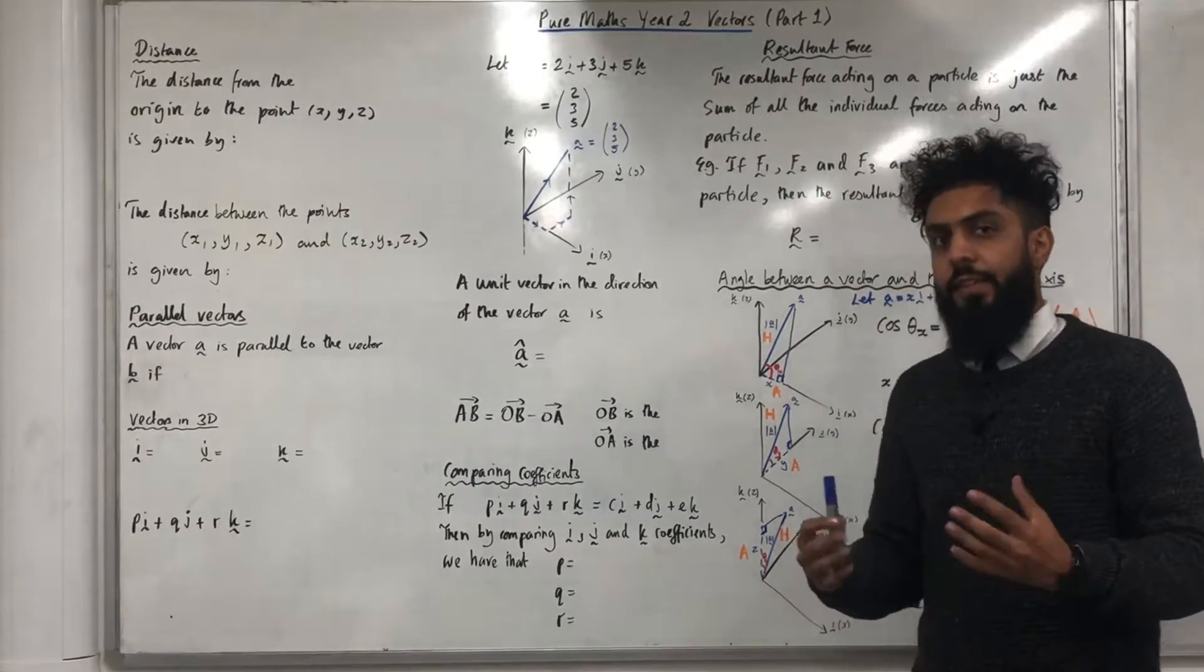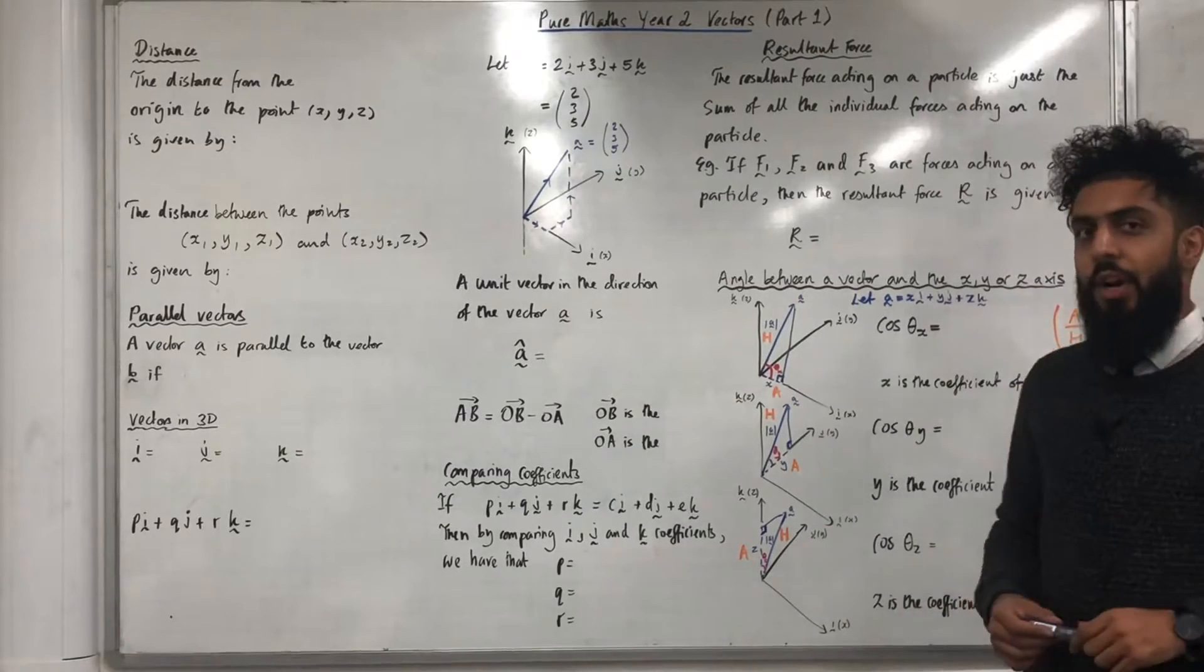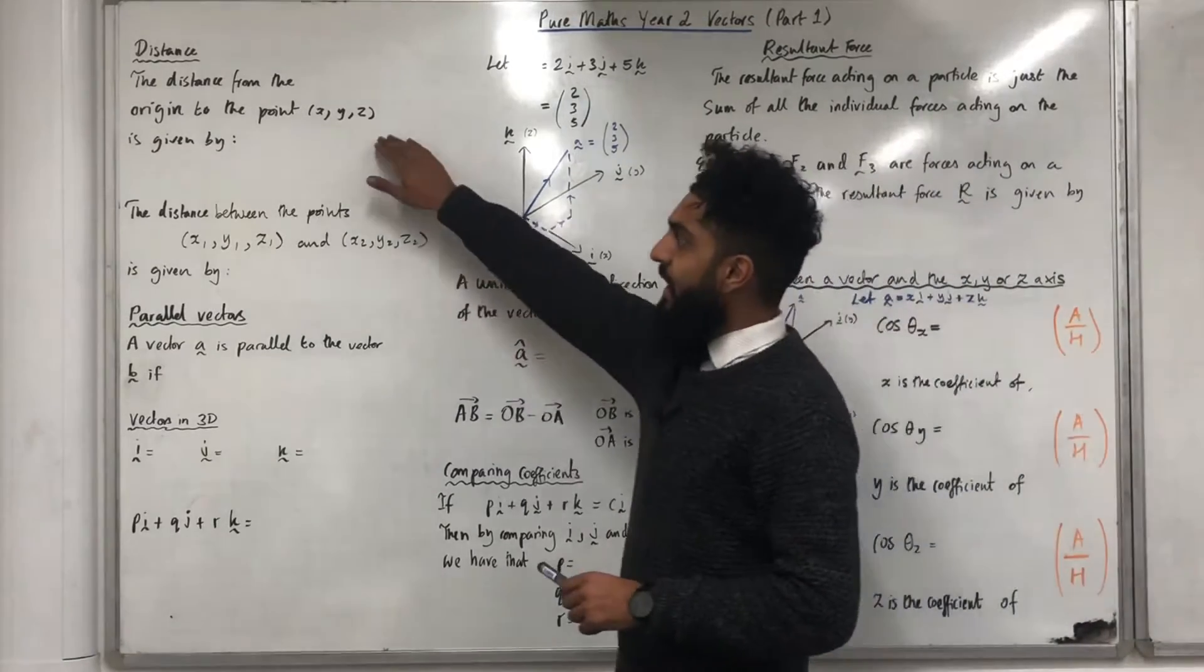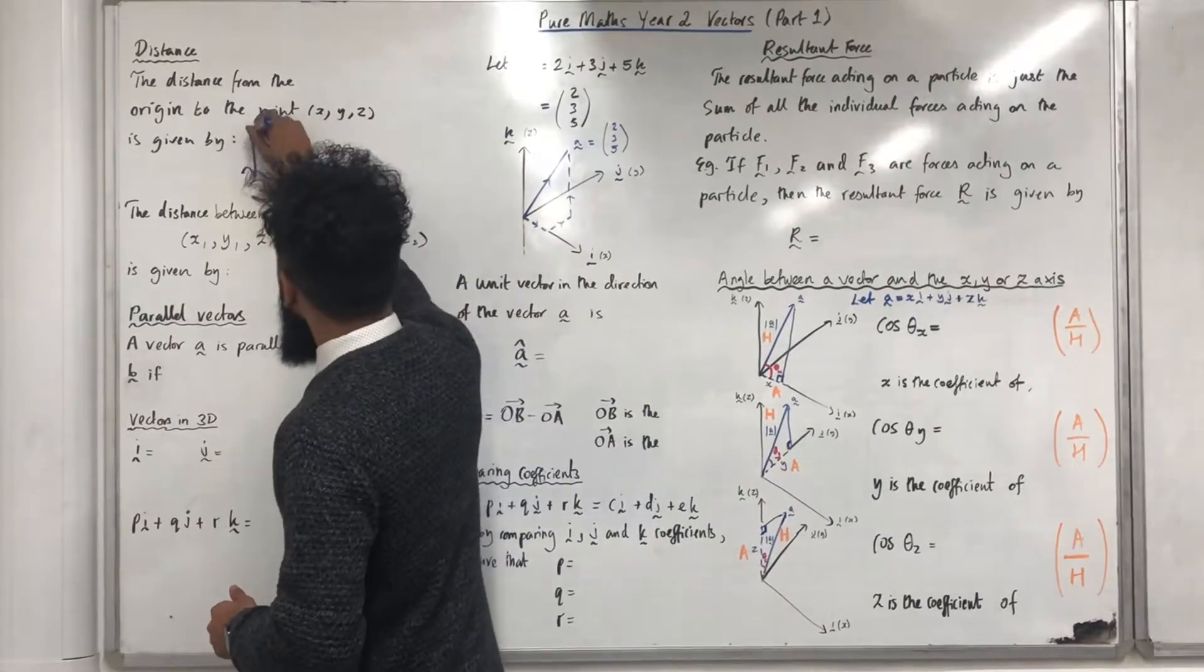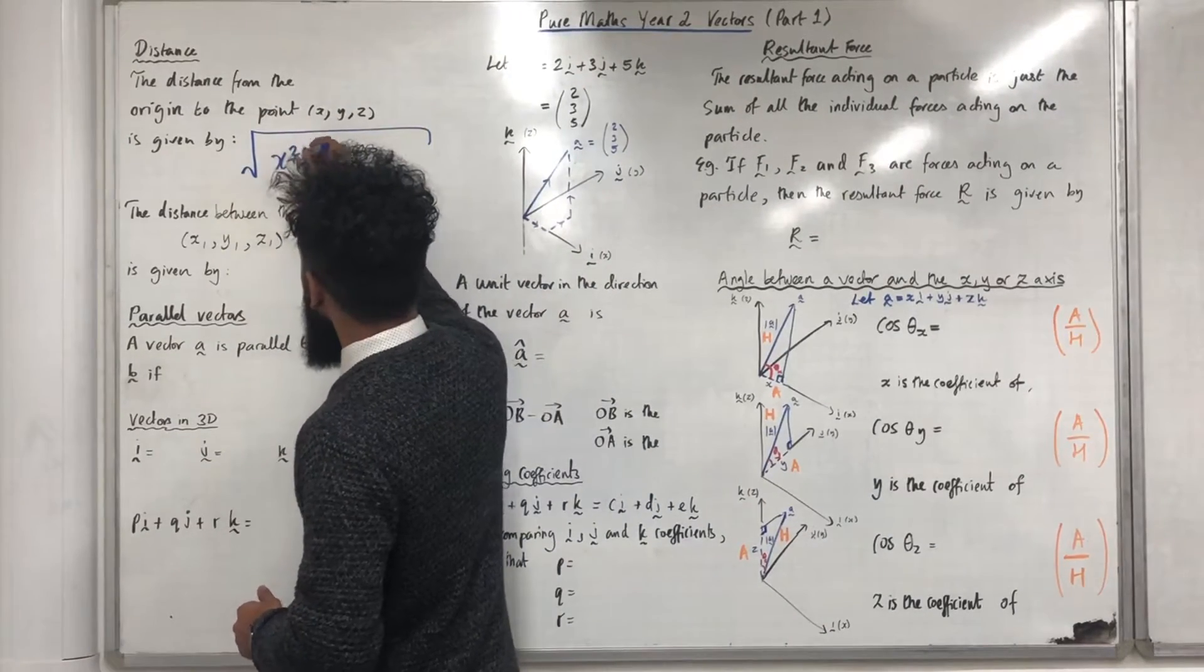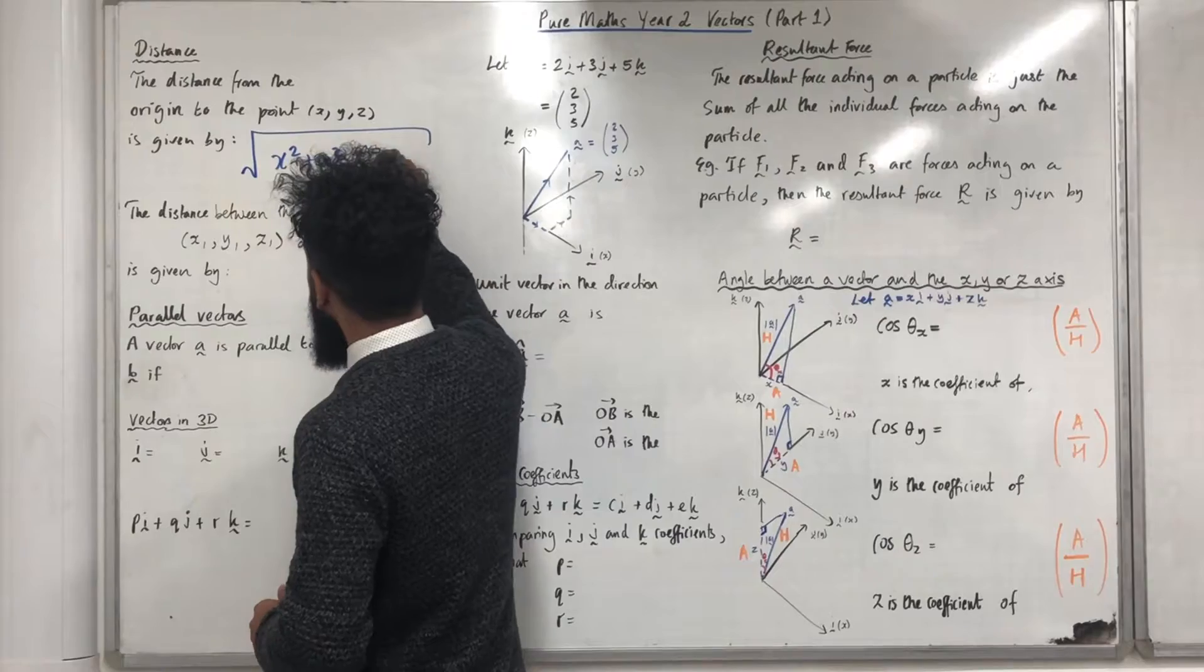Let's start off with distance. The distance from the origin to the point x, y, z is given by square root x squared plus y squared plus z squared.